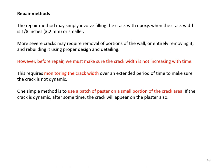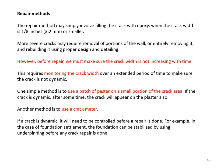One simple monitoring method is to apply a patch of plaster on the crack area; if the crack is dynamic, it will appear on the plaster. Another method is to use a crack meter. If a crack is dynamic, it must be controlled before repair—for example, in the case of foundation settlements, the foundation can be stabilized by underpinning before crack repair.